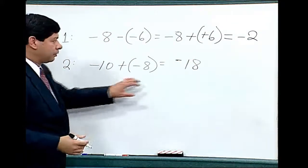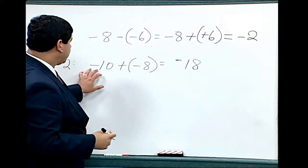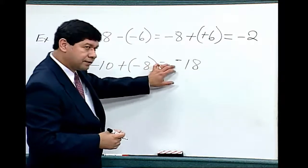Because you owe somebody money, we're looking at a negative sign. So negative ten plus negative eight equals negative eighteen.